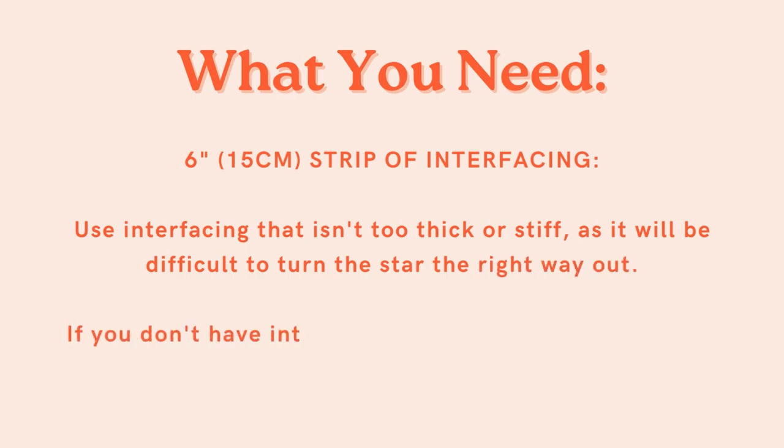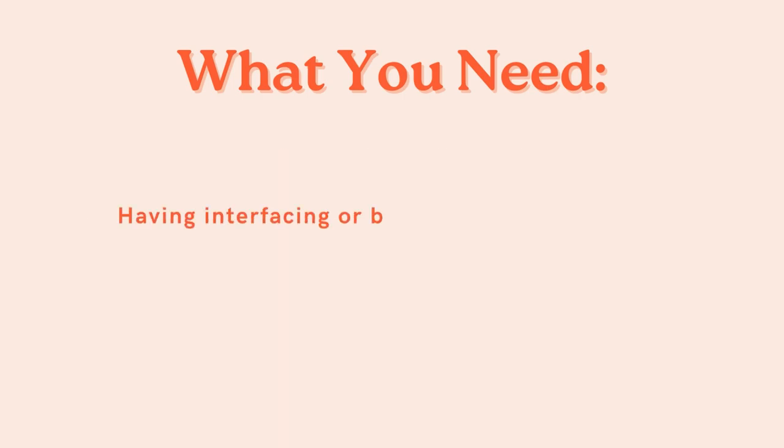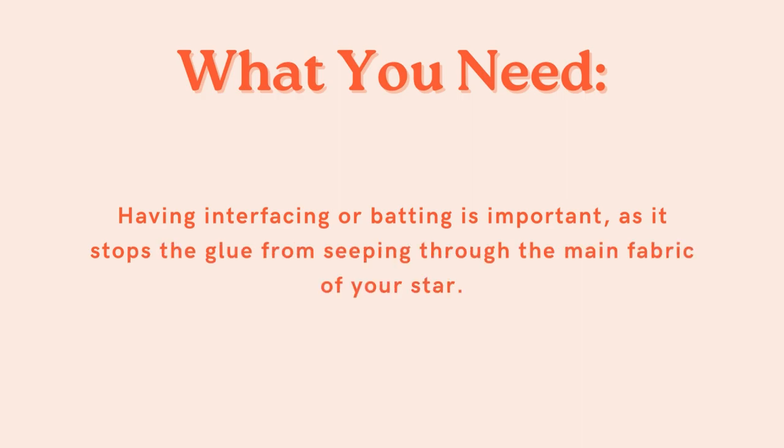If you don't have interfacing you can also use a low loft batting or wadding, they're the same thing. Having interfacing or batting is important as it stops the glue from seeping through the main fabric of your star.